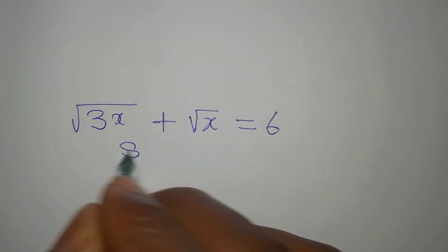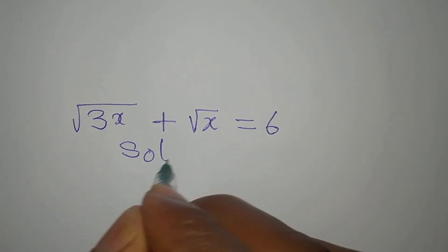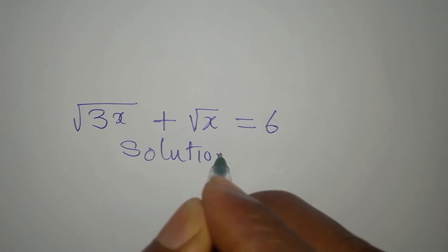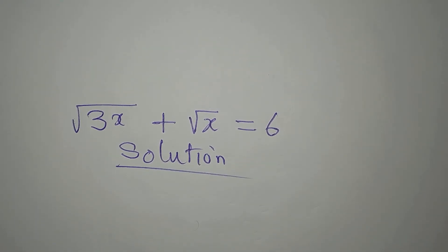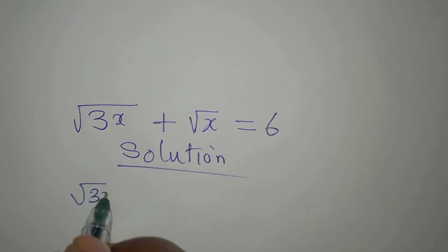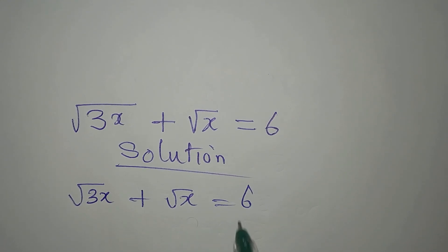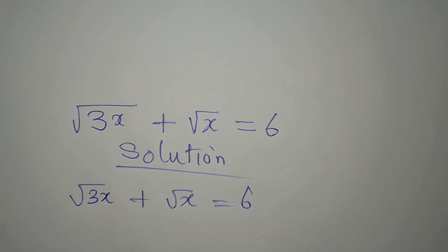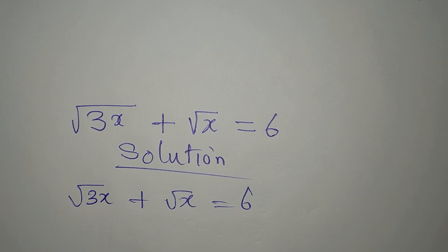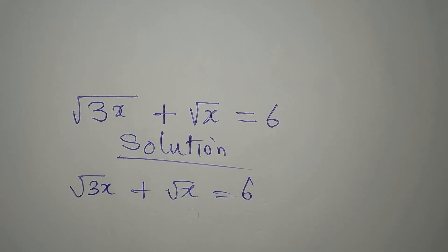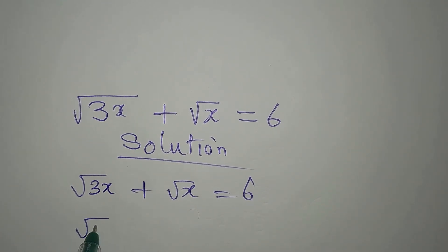Hello everyone, let's provide a solution to this very quickly. We have the square root of 3x plus the square root of x equals 6. Our next target is to remove the square roots, and to do that we will square both sides.